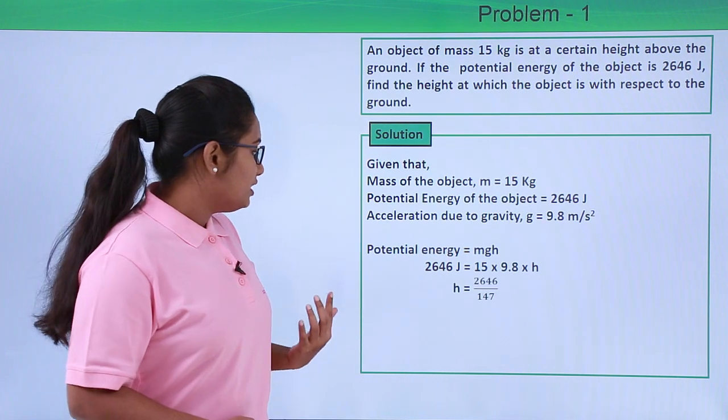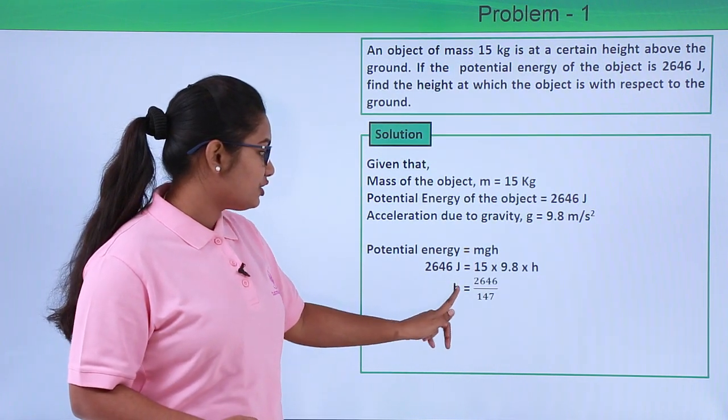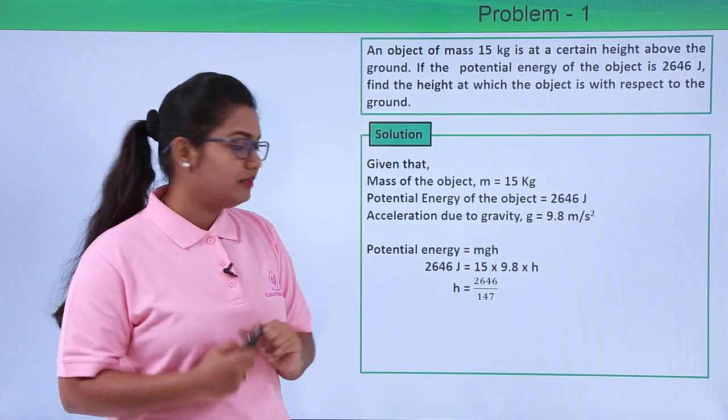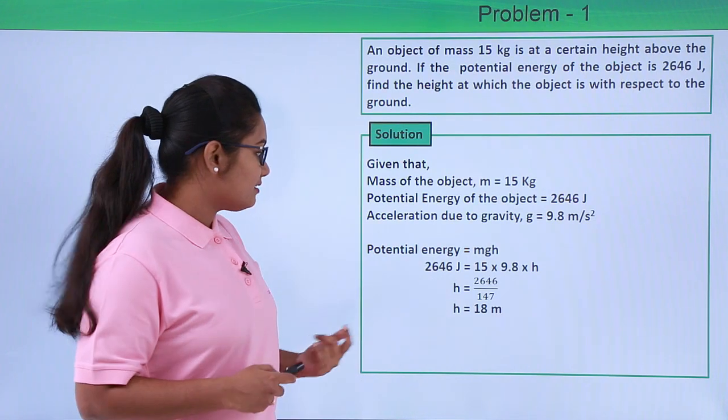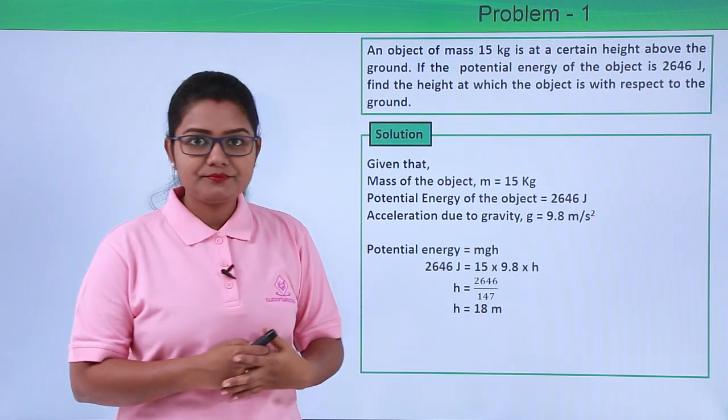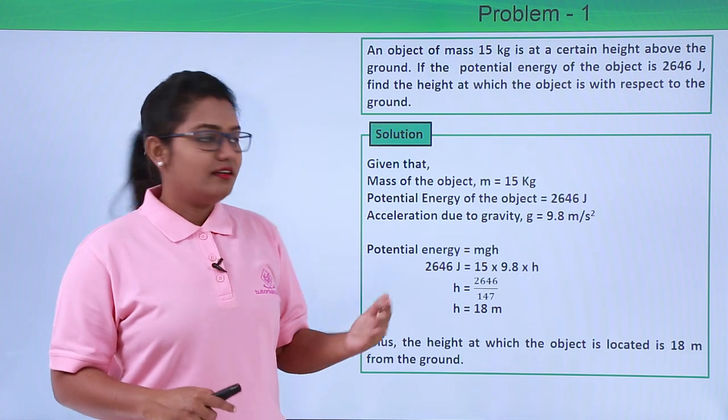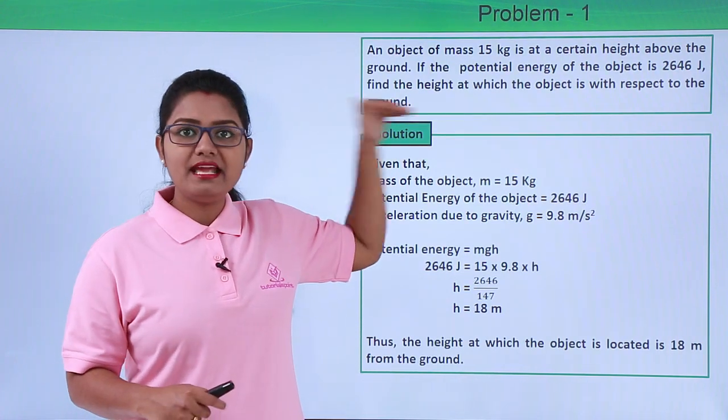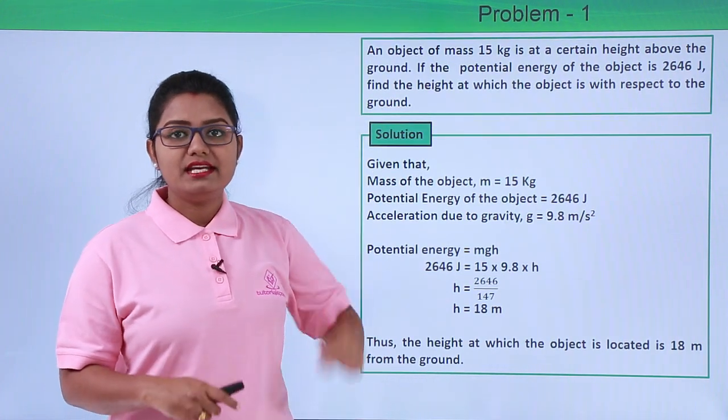On evaluating, we have height h equals 2646 divided by 147, and this turns out to be 18 meters. So the height at which the body is placed with respect to the ground is found to be 18 meters.